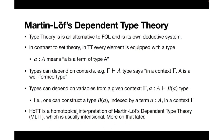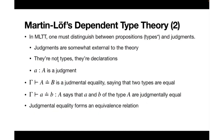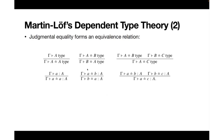In Martin-Löf's type theory, we can distinguish between propositions and judgments. Judgments are declarations of certain expressions. For example, a : A is a judgment. Another example says that two types A and B are judgmentally equal, which is denoted with a dot under the equality sign. Judgmental equality forms an equivalence relation on types and terms — it is reflexive, symmetric, and transitive.